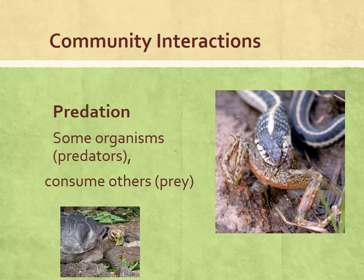Now let's look at community interactions. This is technically not symbiosis, but it is interactions happening inside the community. First is predation, which involves a predator and prey. The predator is the one doing the hunting and killing; the prey is the one who gets hunted or killed. In this case the frog is the prey and the snake is the predator.